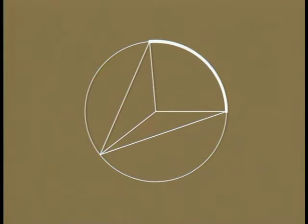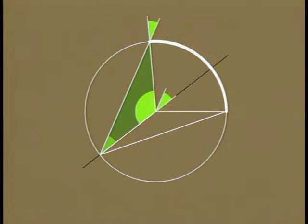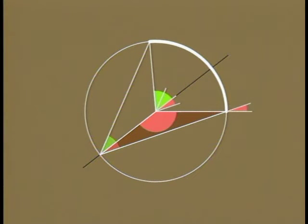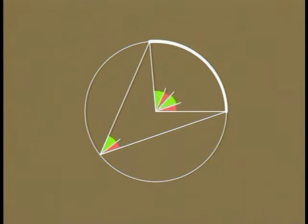To see why, draw another radius. You get two isosceles triangles. These two angles are equal and together they form part of the central angle. And these two angles are equal and together form the other part of the central angle. So now we see that the central angle is indeed twice the inscribed angle.